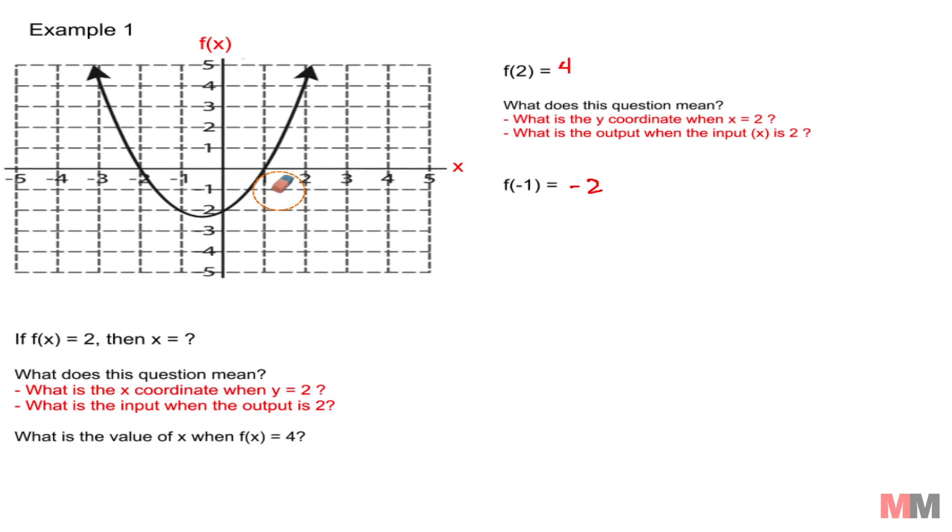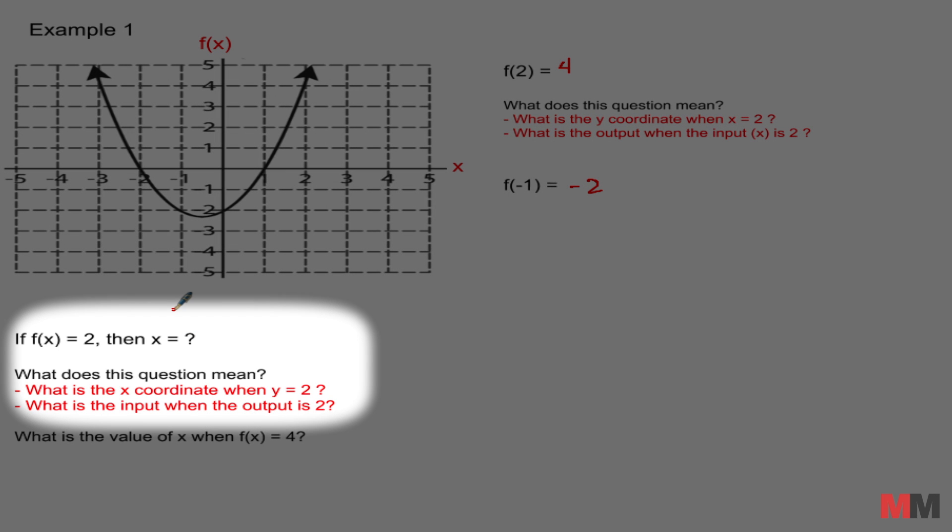Vice versa, they're going to ask it to you in the other way around. If f of x equals 2, then what is x? x equals blank. So what does this mean? It's just asking what is the x coordinate when y equals 2, or what is the input when the output is 2.